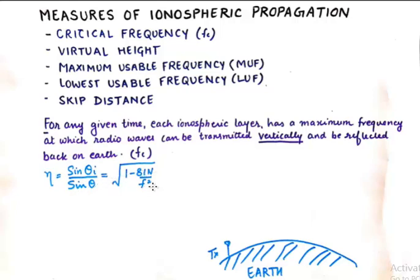Sine of theta_i upon sine of theta_r is equal to one minus 81N upon f². This is the frequency that we are talking about. We know that the refractive index depends upon the frequency that we send, and N is the maximum ionization density of a layer.